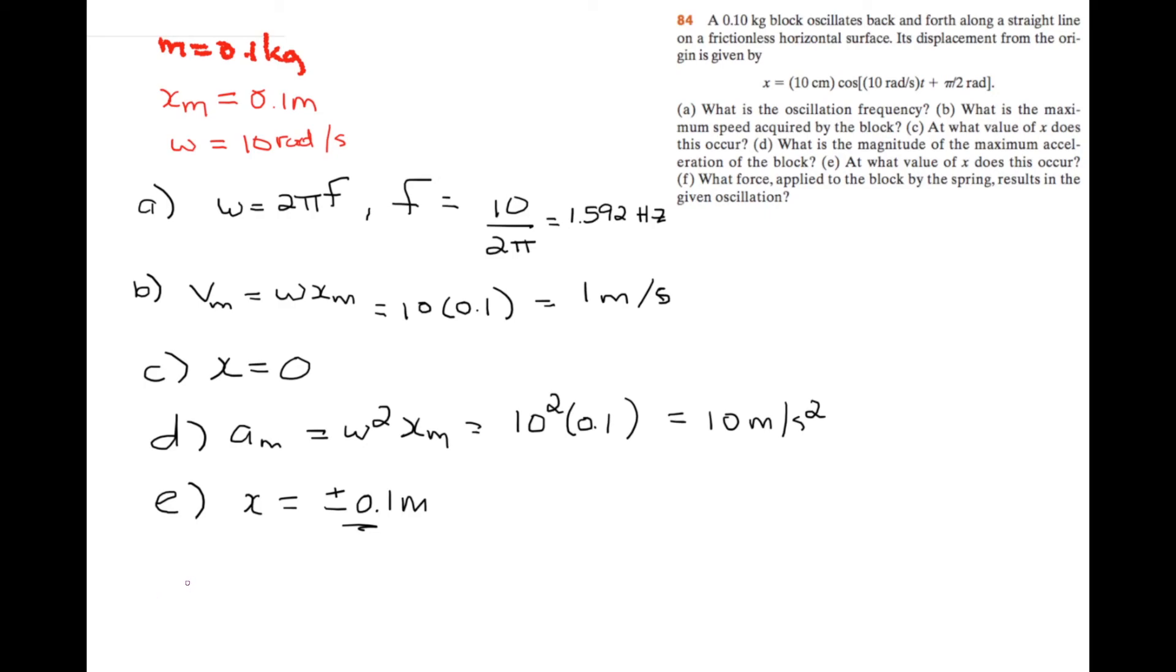And then for f, what force applied to the block by the spring results in this given oscillation? So there's two ways. We can do f equals kx or f equals ma. Just do ma is equal to 10 times 0.1, and this gives us 1 newton of force applied to the block at the amplitudes to give this oscillation.